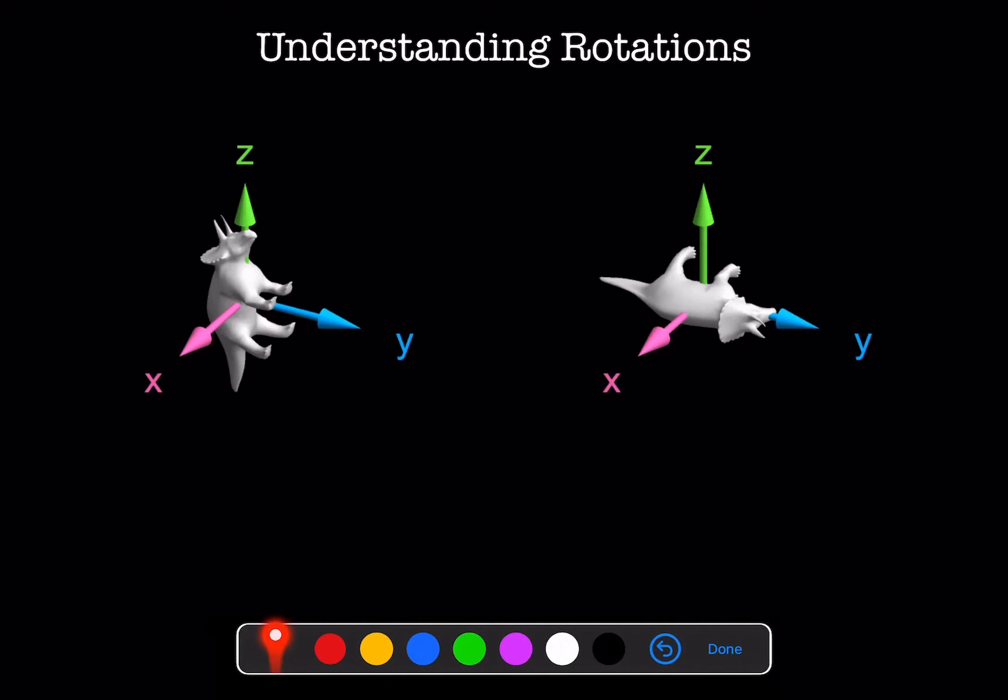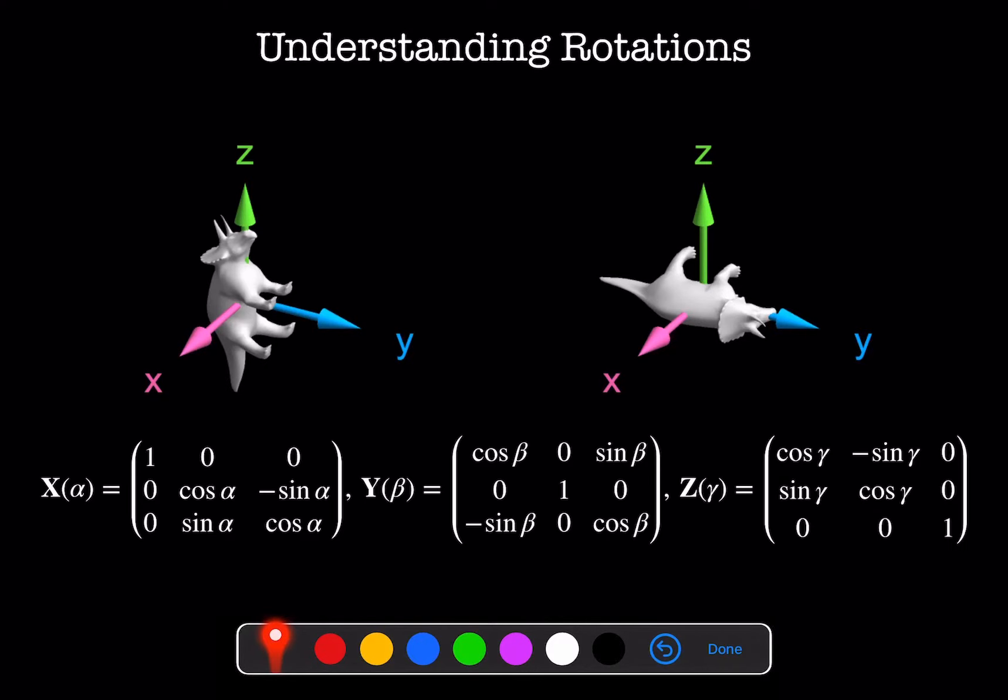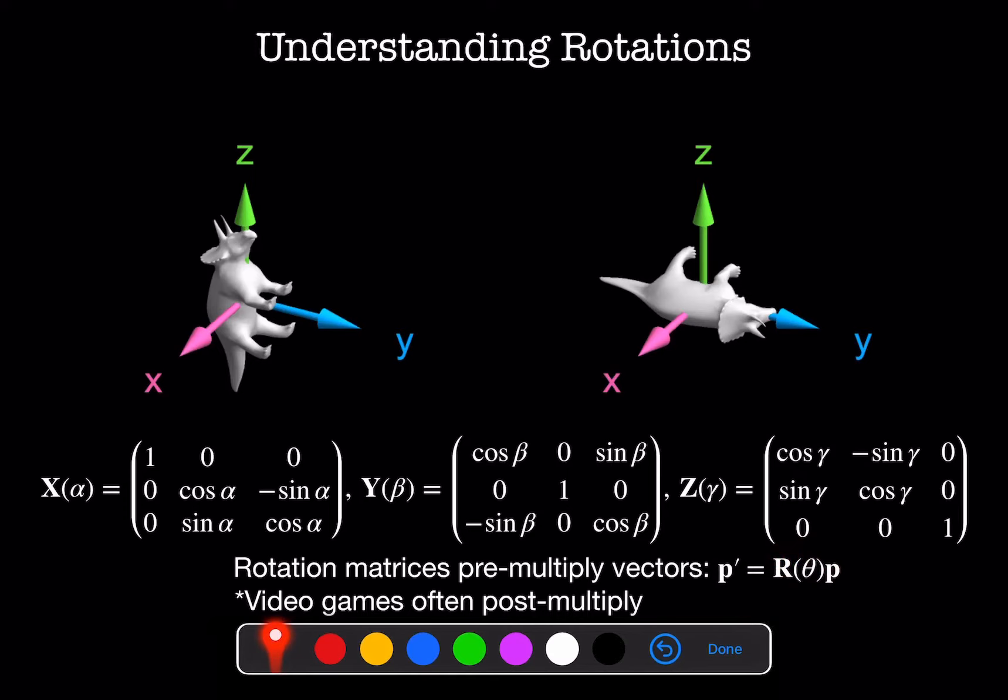One way to think about this is to note that matrix multiplication doesn't commute. When we want to rotate a point P in 3D about some axis, we often use rotation matrices. In physics, to find the position of a point P after it has rotated by some angle theta, we multiply the vector P by the rotation matrix R, where R is on the left side of P. This is sometimes called pre-multiplication in computer science. In video games, we often multiply on the right. This is called post-multiplication.